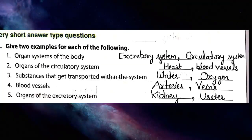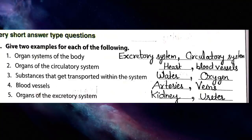Next question: give two examples for each of the following. First — organ systems of the body: excretory system (E-X-C-R-E-T-O-R-Y), which helps remove waste, and circulatory system (C-I-R-C-U-L-A-T-O-R-Y), which transports substances within the body.